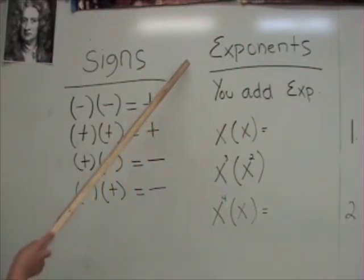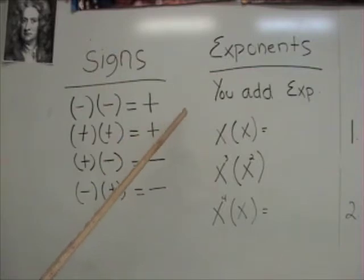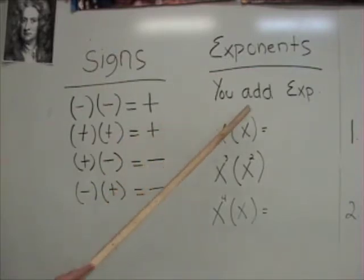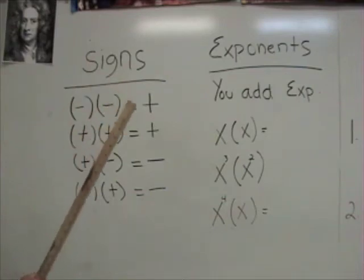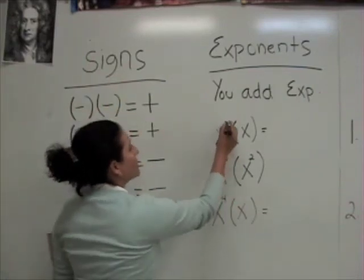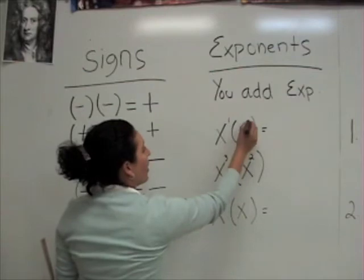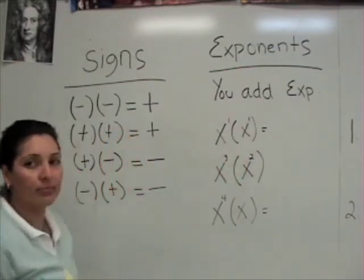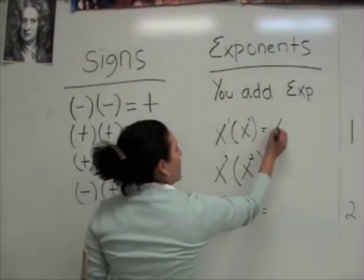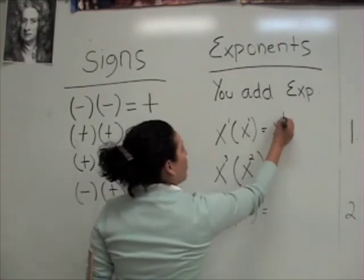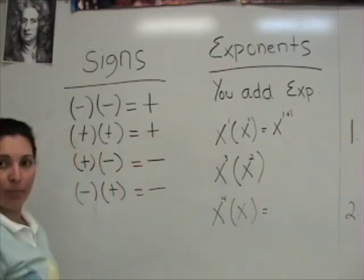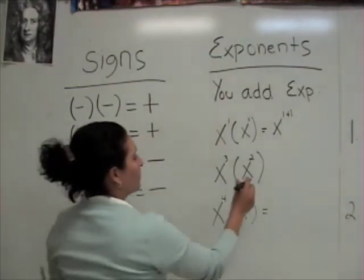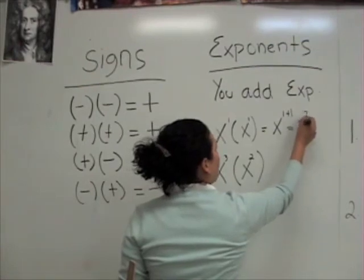Another thing to keep in mind is the exponents. When you are multiplying exponents, you add them. If you have x that multiplies x, we know that this x has a power of 1, and this other x has a power of 1. So it's going to be x to the power of 1 plus x to the other power of 1, giving you x to the second power.